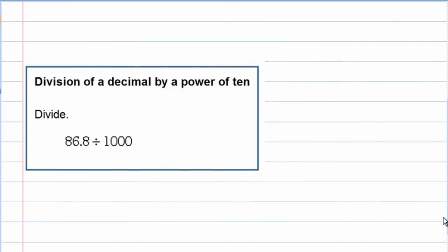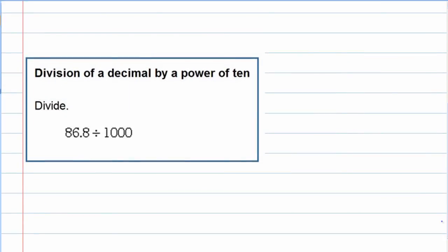Let's take a look at one of the examples here. We are dividing 86.8 by 1,000. So let's take our number, 86.8.